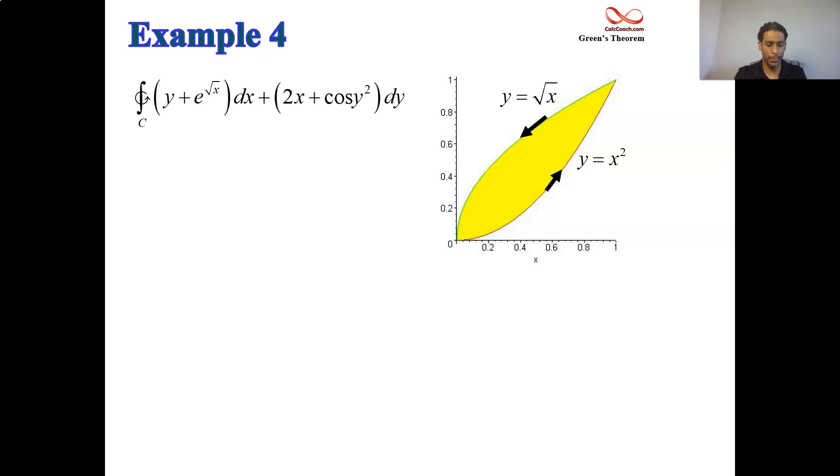It is simple. It is piecewise smooth. And it is positively oriented. The interior region is the yellow shaded area there. We can trade in this line integral for a double integral over the interior region.